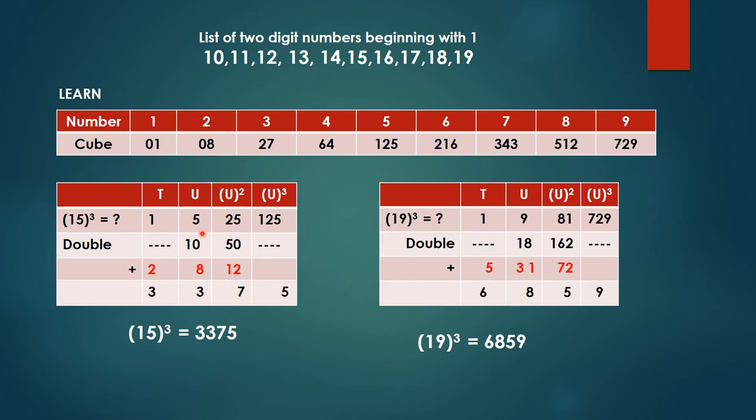Now 10 plus 5 is 15, 15 plus 8 is 23. So 2 is carried over and then 3 is over here. Now 2 plus 1 is 3. So it is so simple. 15 to the power 3 or 15 raised to 3 or cube of 15 is equal to 3375.